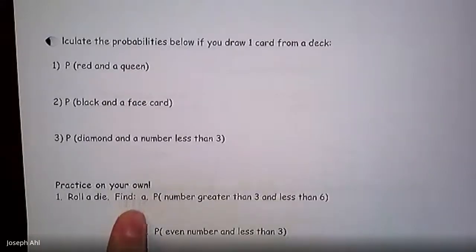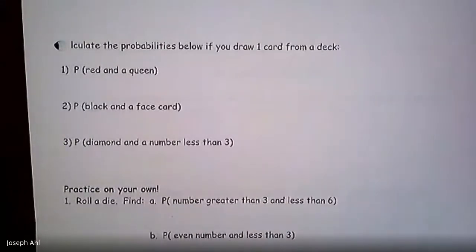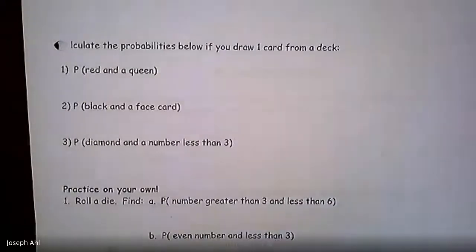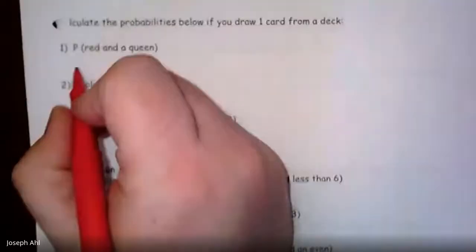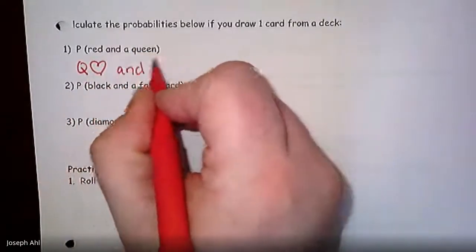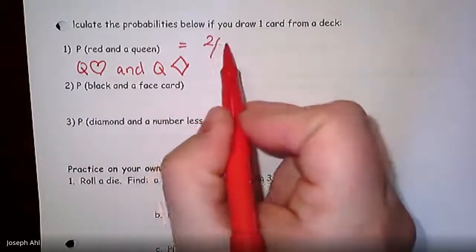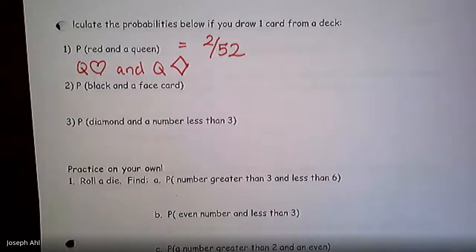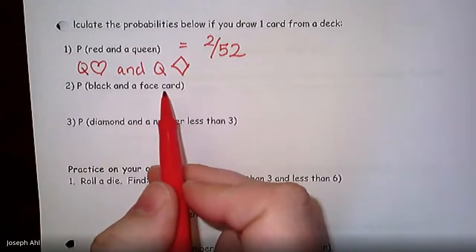Now let's do some card probability. Calculate the probability if you draw one card from a deck. For a red card AND a queen: only two cards in the deck meet both criteria — the queen of hearts and the queen of diamonds. So the probability is 2 out of 52. I haven't been reducing these fractions, but if you do reduce them that is certainly not incorrect — you would get full credit.